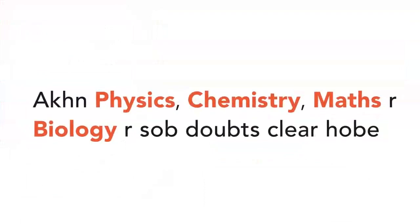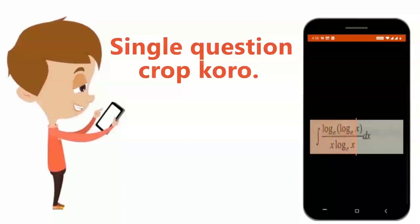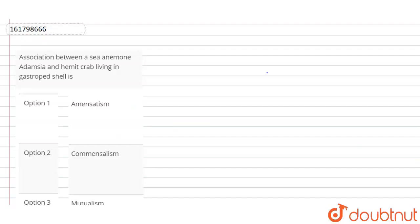The same question is — we will be able to crop the same question. Hello students, the question is: the association between C-anemone Adamsia and hermit crab living in a gastro cell — what is it?